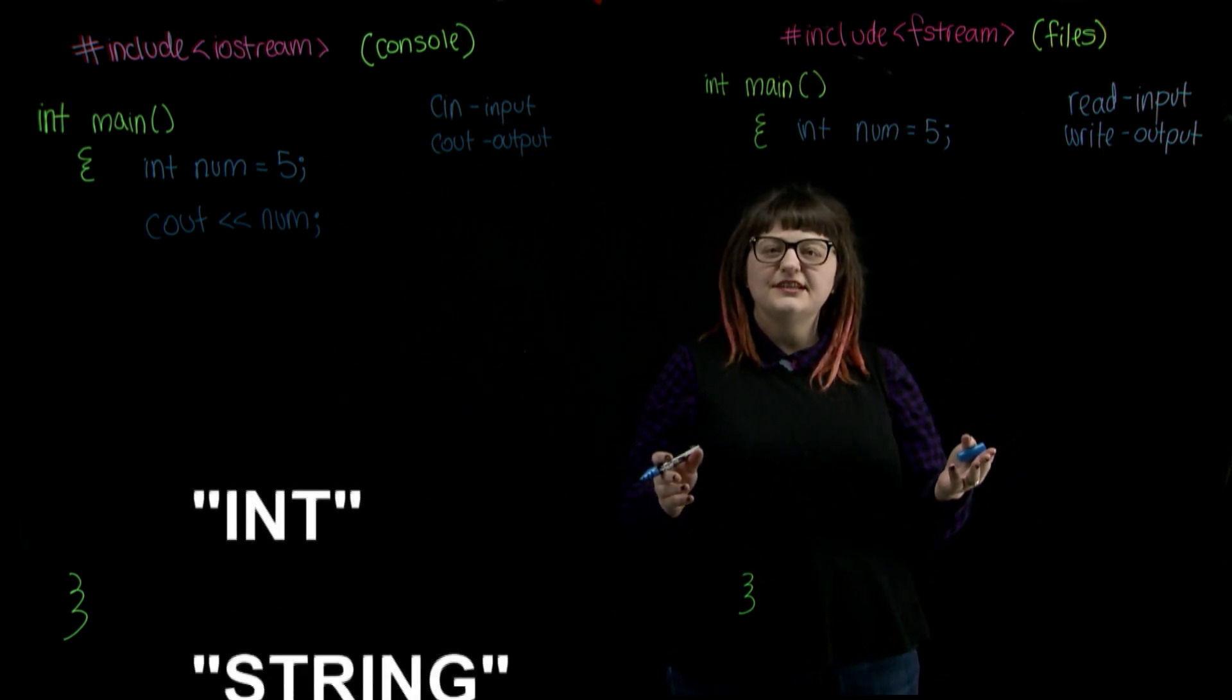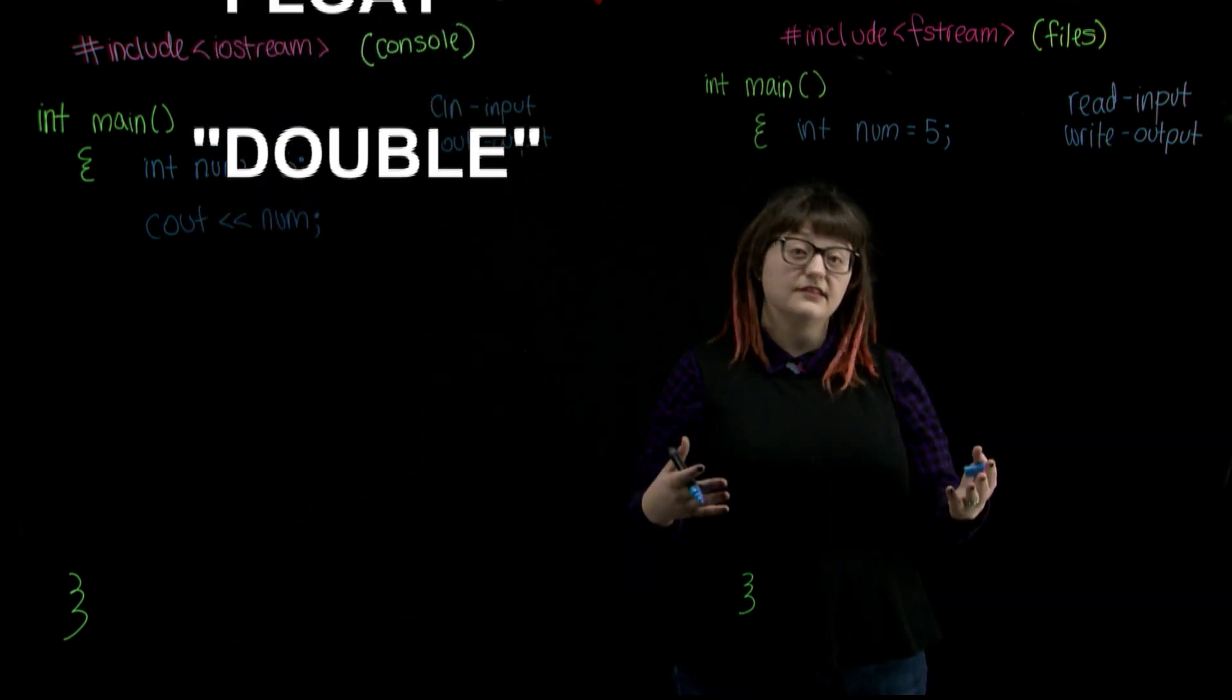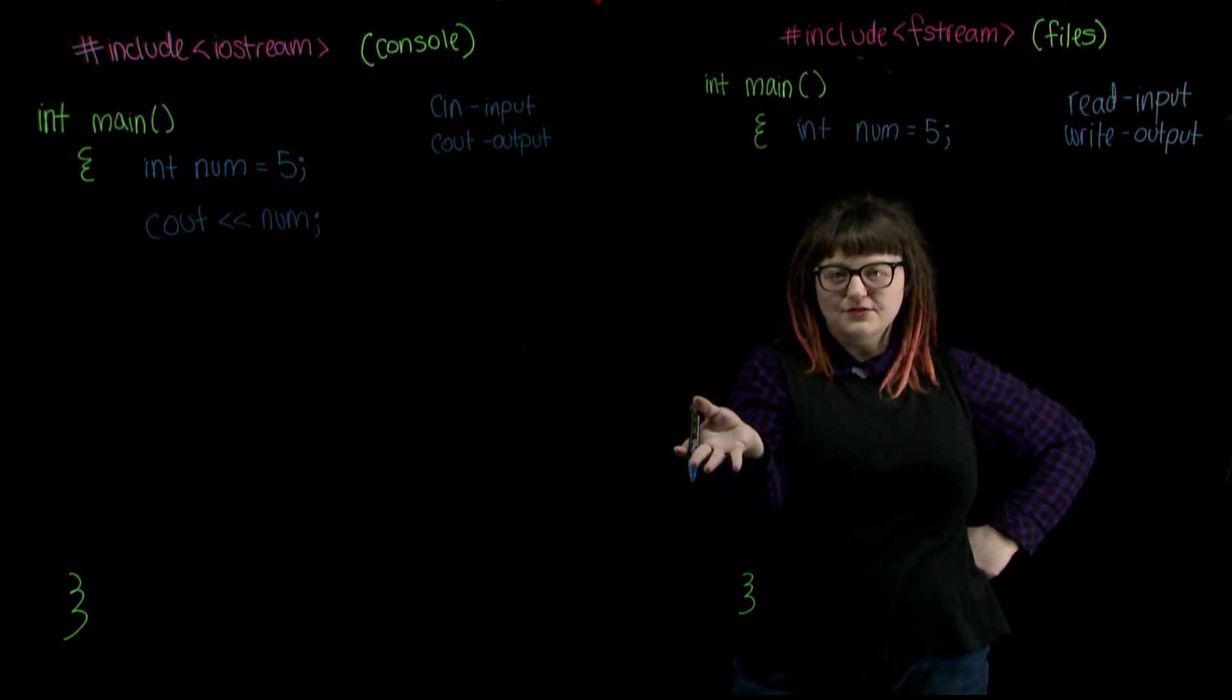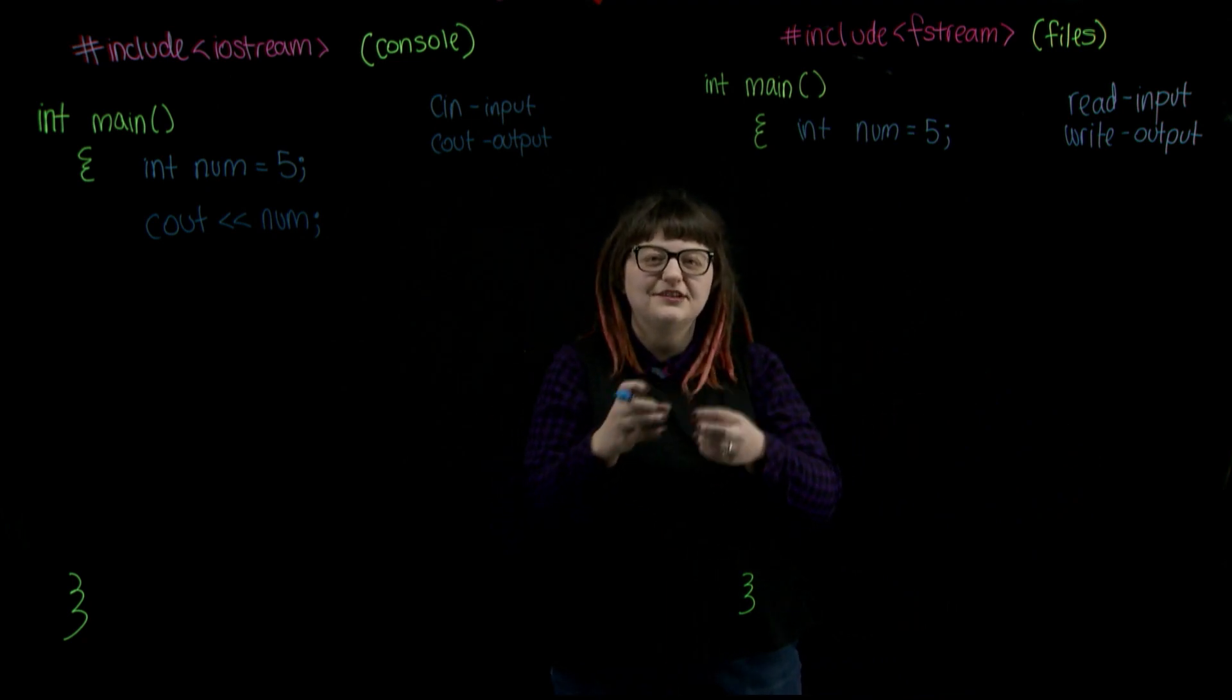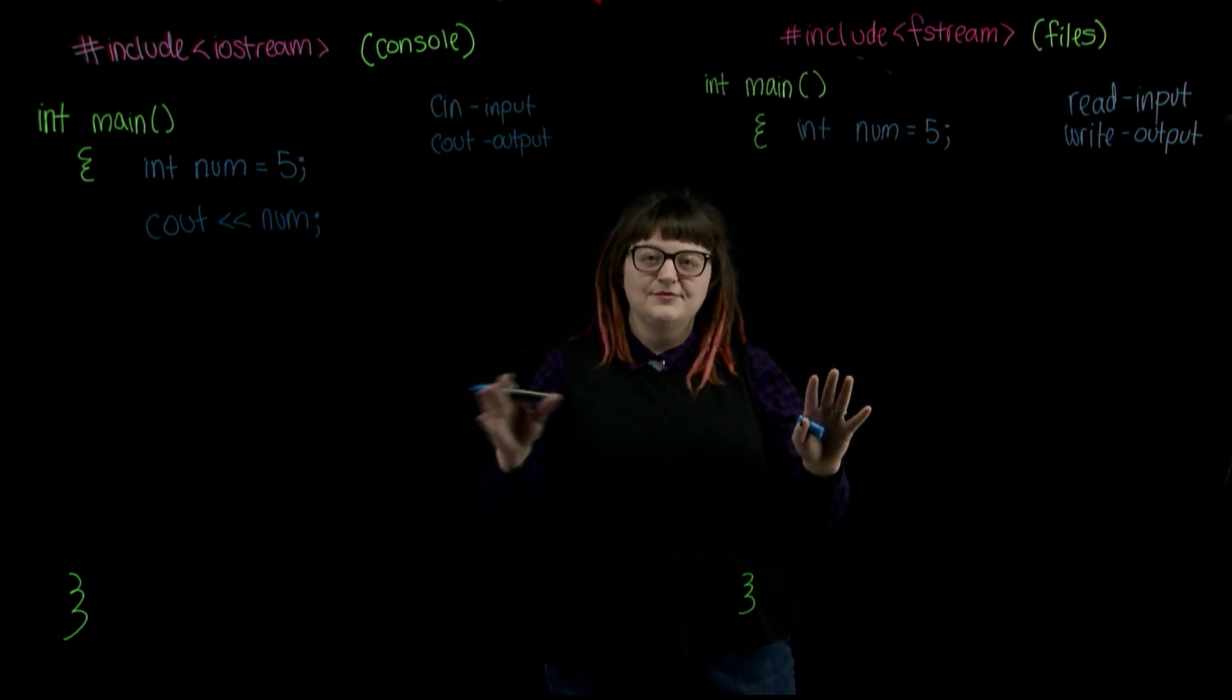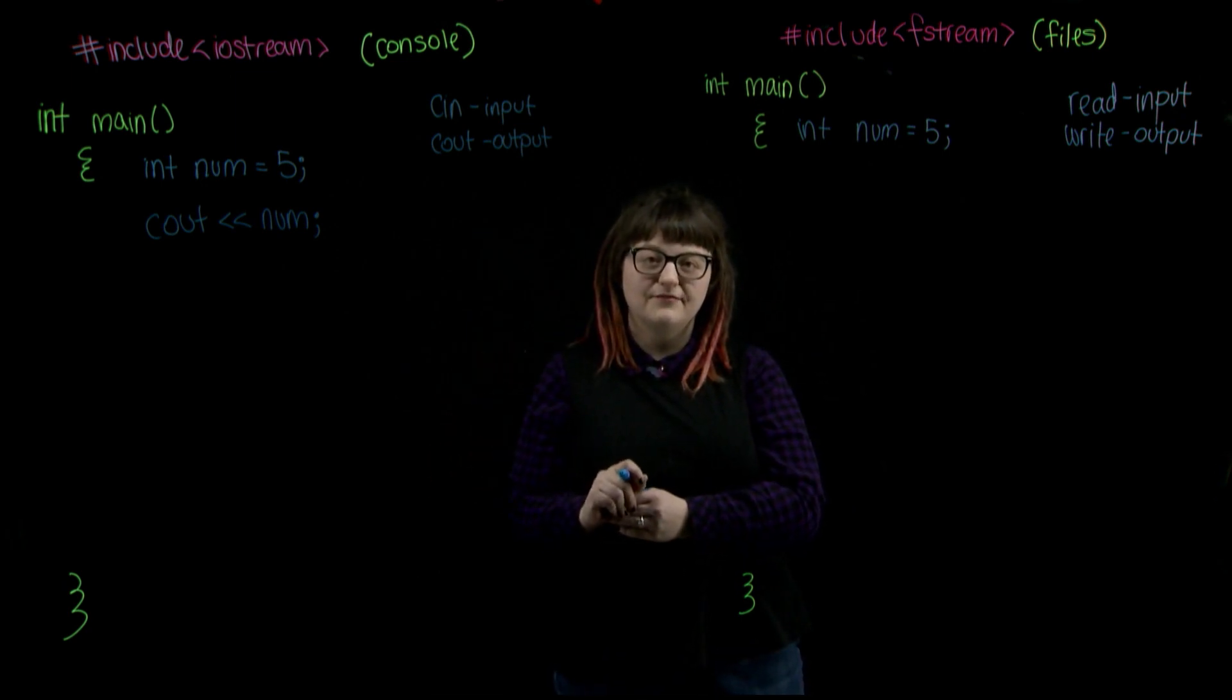So far, we've used data types which can be initialized to a single value, but a file on the other hand could hold a lot of values, right? Like think about the last report that you had to write for school. That was probably a lot of information in one place. Can you imagine having to store each one of those words in a unique string variable? That would be crazy. We would need so many. Instead of that, we're going to use a file object to point our program directly to our file with all that information.